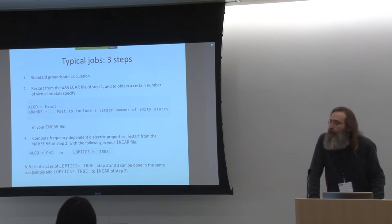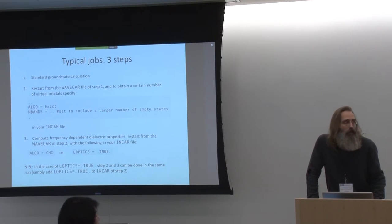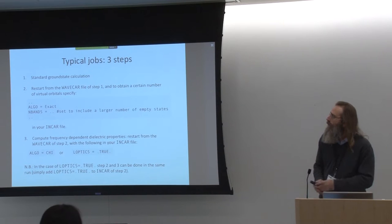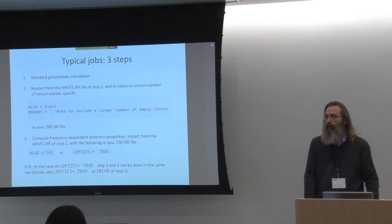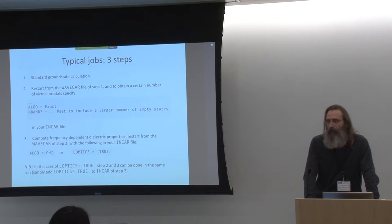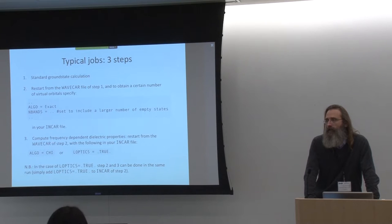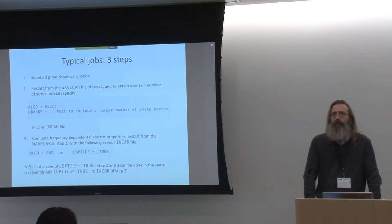A question about the direct diagonalization: which algorithm is used? It essentially calls a ScaLAPACK routine — the matrix is set up and then ScaLAPACK is called to diagonalize it. How large are these matrices? In many cases, they're on the order of 50,000 × 50,000 entries. For a recent GW calculation on a cell with 256 silicon atoms, there were something like 47,000 bands — the whole spectrum. It is quite sizable.